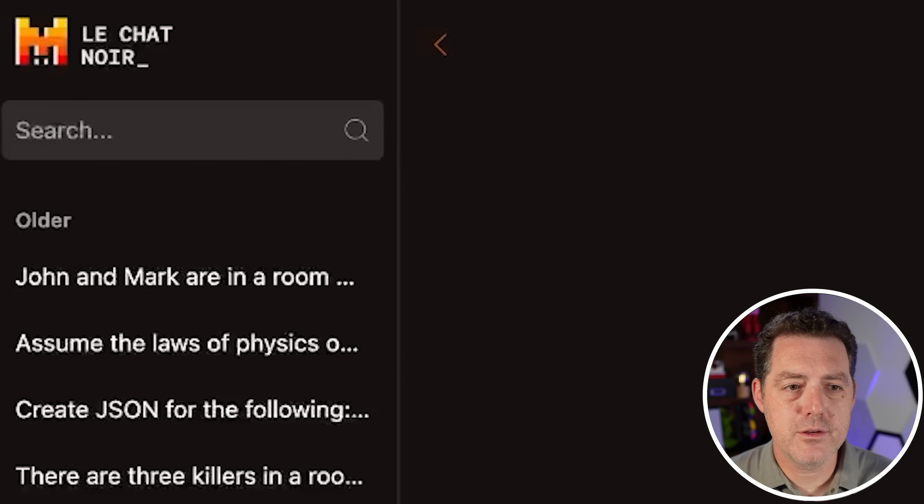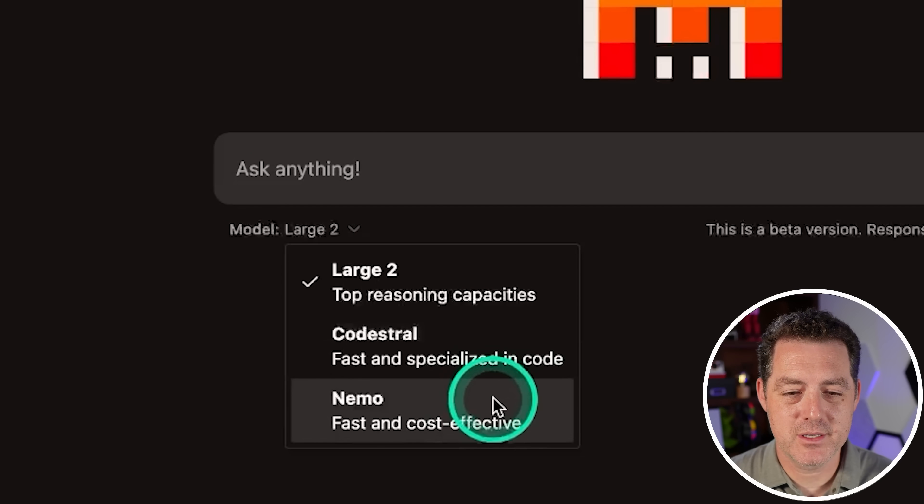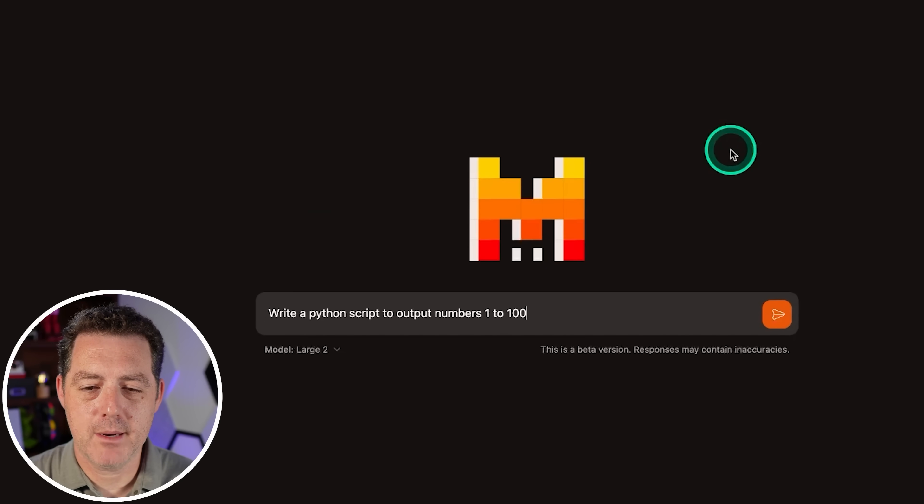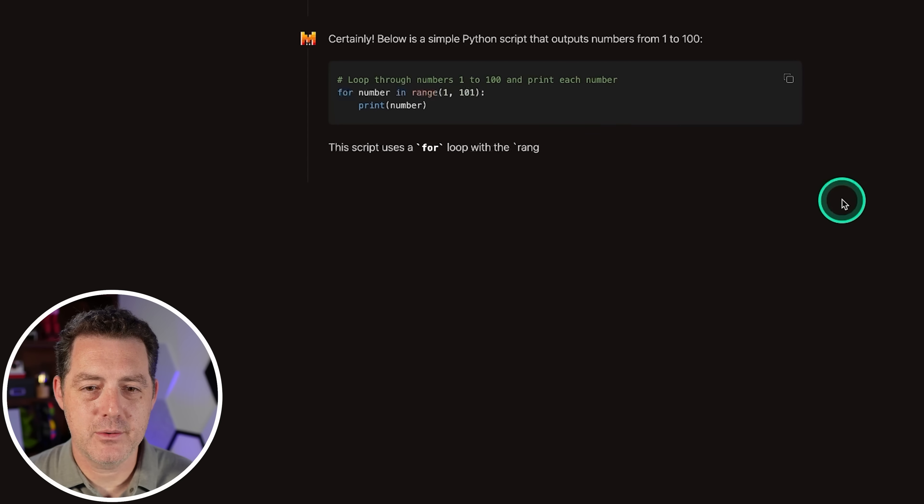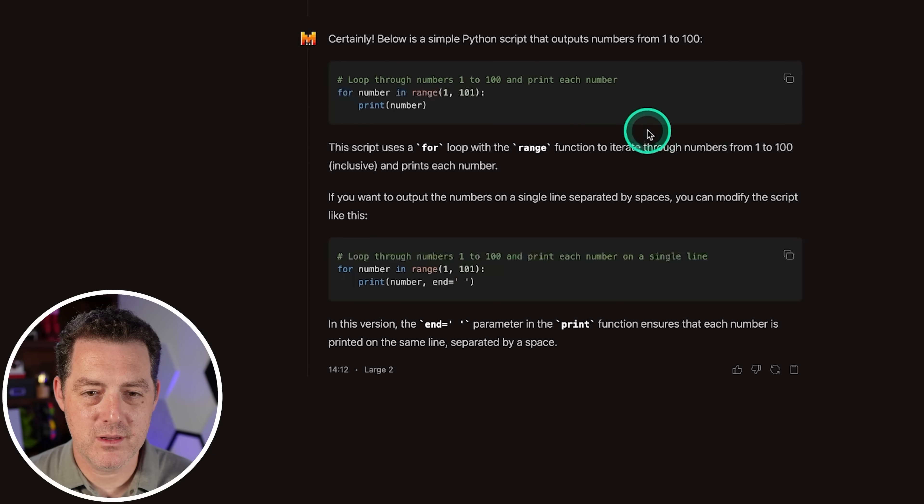All right. So we're going to be using LeChat for this, and you can see right here, Model Large 2. And of course, we can use Nemo and CodeStroll for other use cases, but today we are testing Large 2. First, write a Python script to output numbers 1 to 100. So it is not super fast, but this is more than usable. It is giving us two different versions, one here, and if we want it separated on a single line, there's another version. Both of these are a pass.